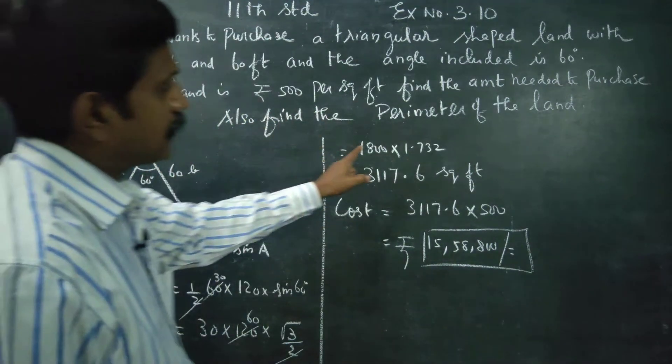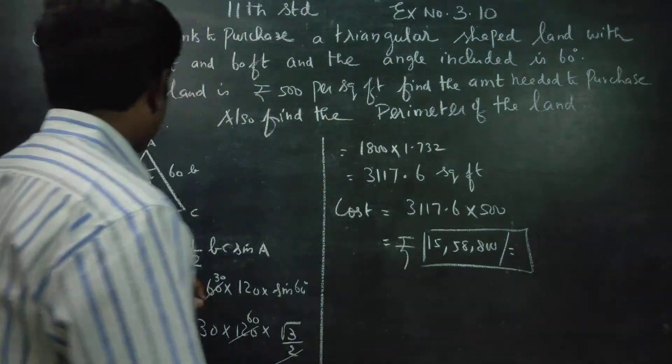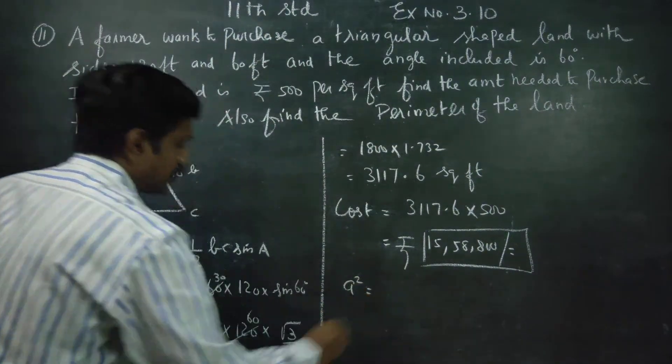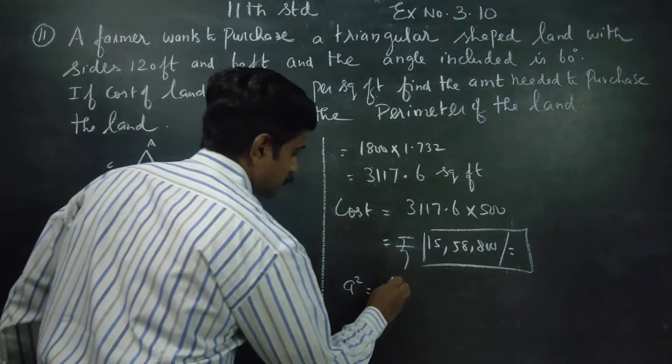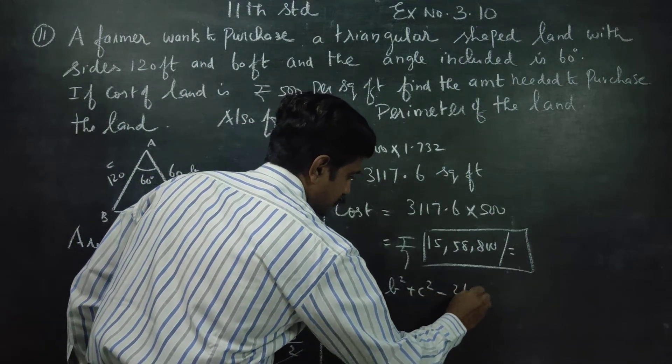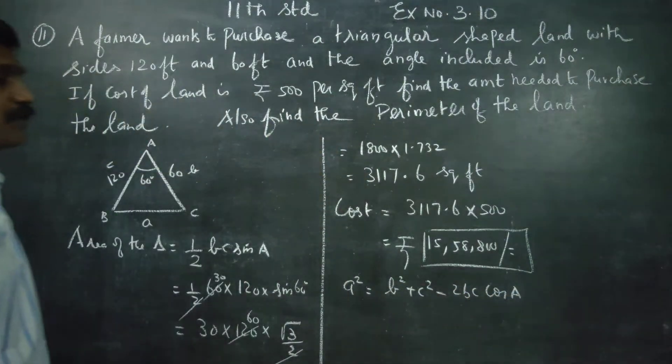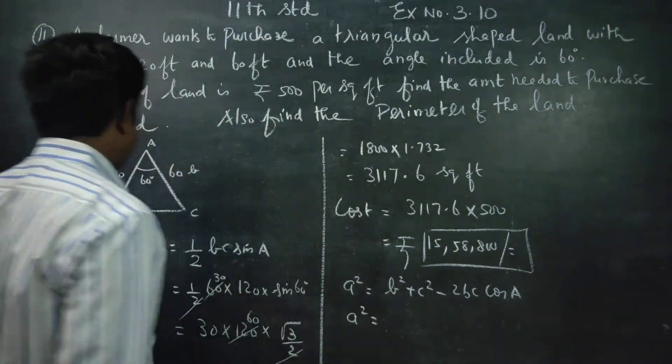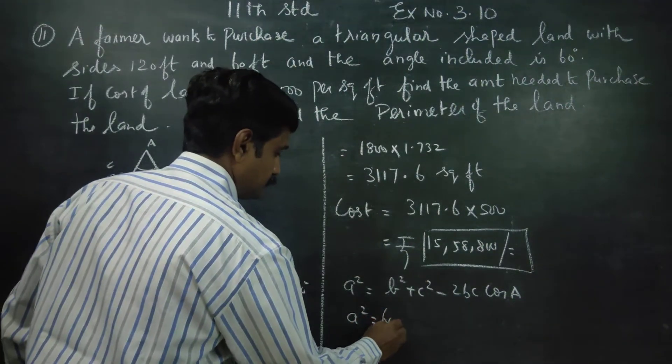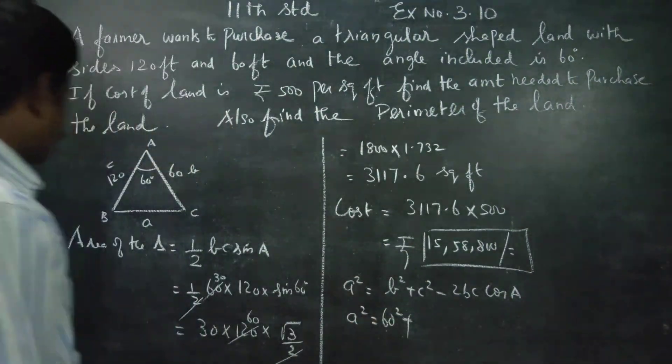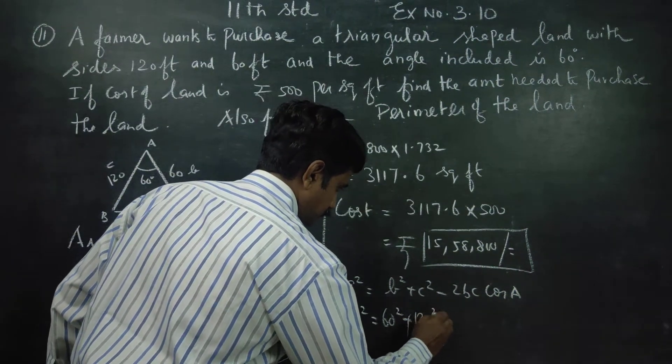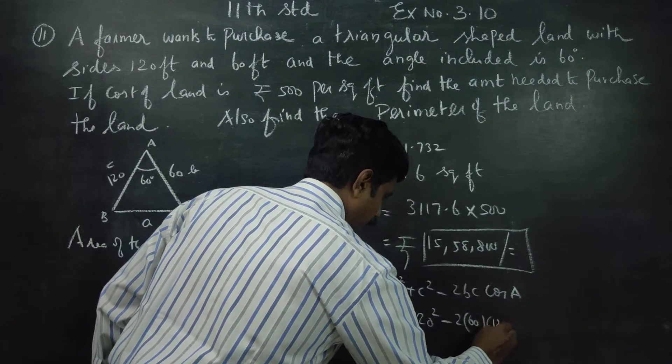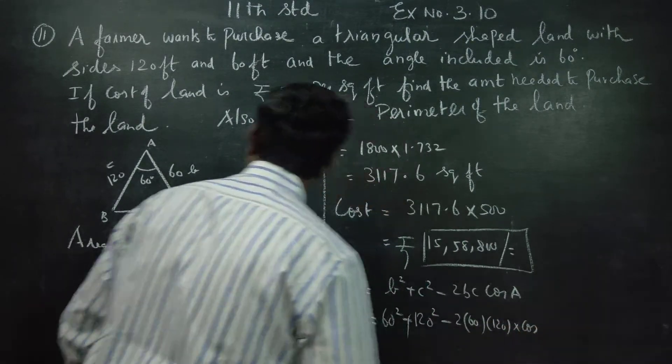If you have to find the perimeter, what is the formula? a² is equal to b² plus c² minus 2bc cos A is the formula.